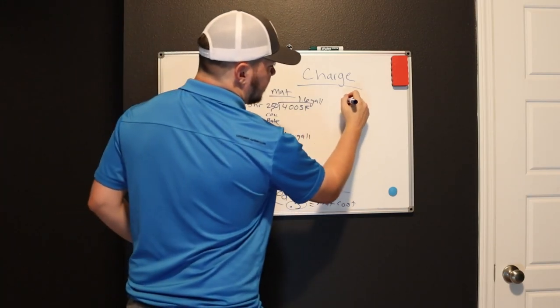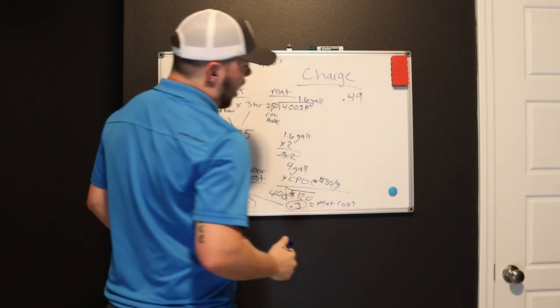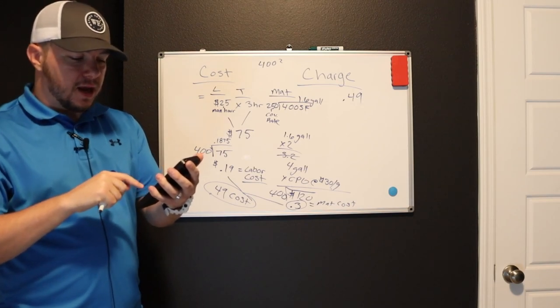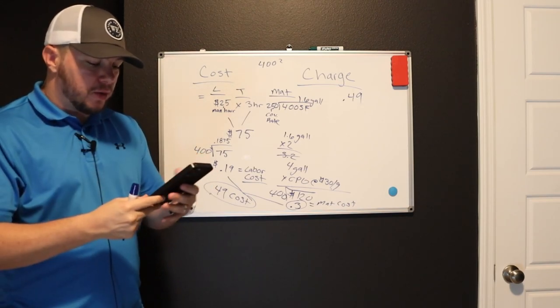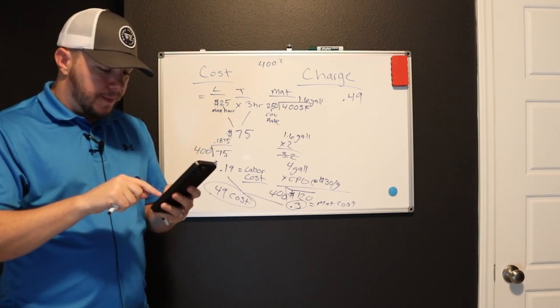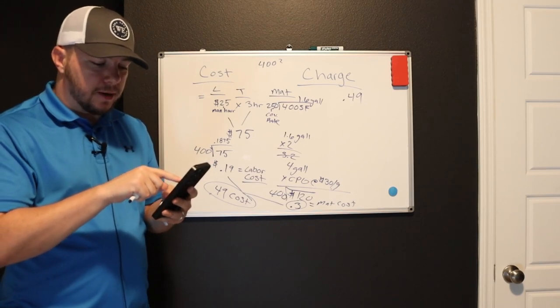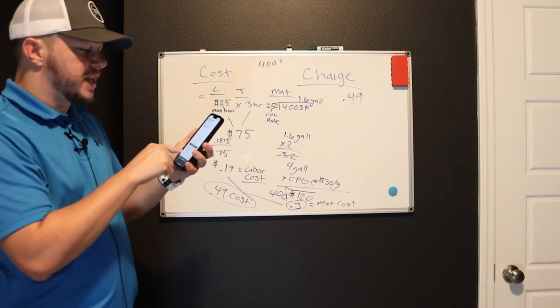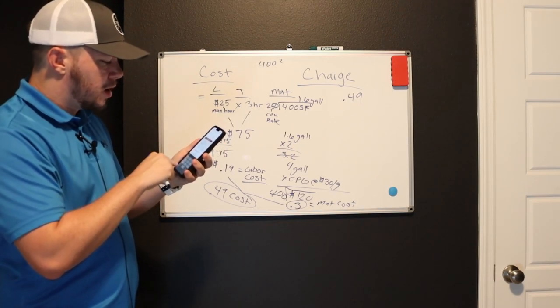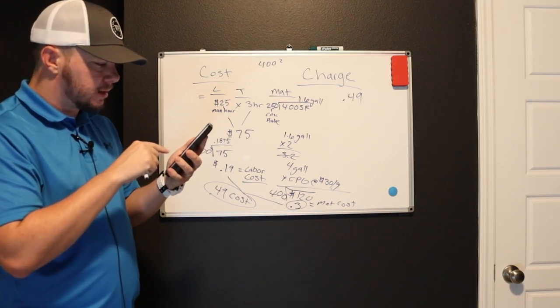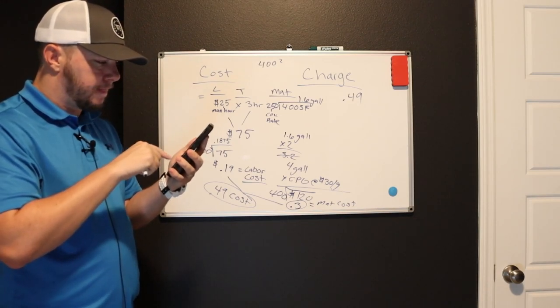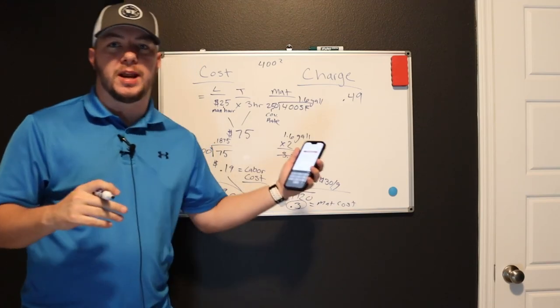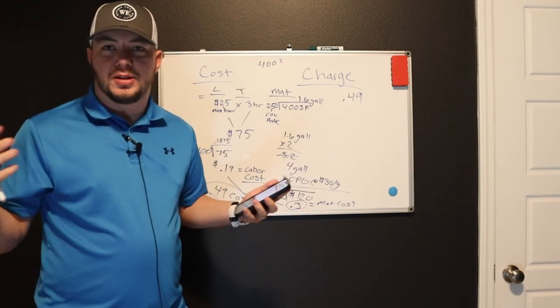So you're at $0.49. Well, if you're at $0.49, what should you charge? A lot of people in residential paint will tell you that 50% margins is a good thing. So what I do is I go to profit margin calculator. It's on calculatorsoup.com. They have a profit margin calculator. So if it's going to cost you .49 cents, then you want to, if you want a 50% profit margin, you need to at least double that. So what's .49 times two? It's 98 cents.